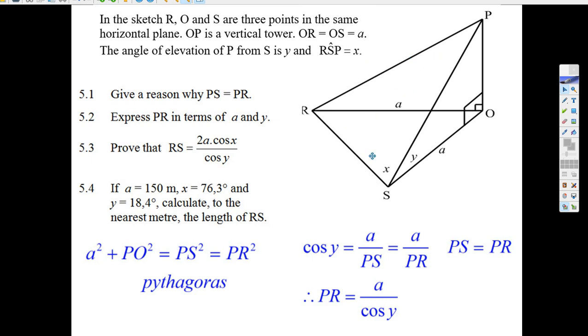If you can't see this, it's a triangle, looks like a slice of cheese, but this is one side on the top. OP is a vertical tower, that's how tall the cheese is.